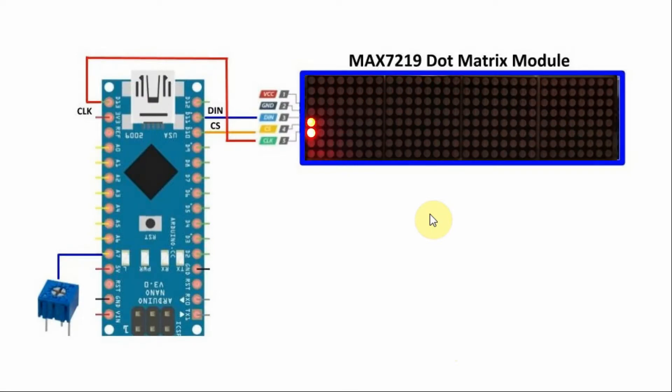In this video, we will focus on pixel manipulation on the MAX-7219 dot matrix display by sketching different pixels and by moving the pixels and controlling the speed at which the pixels are moved through this potentiometer which is connected to analog pin A7.